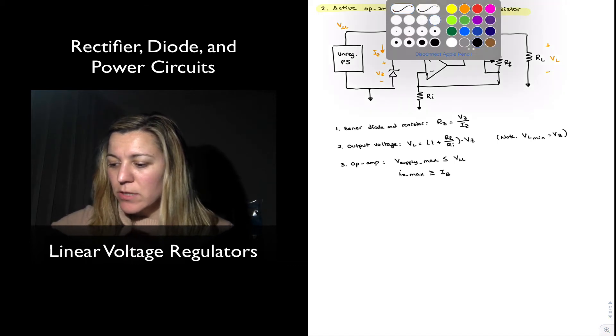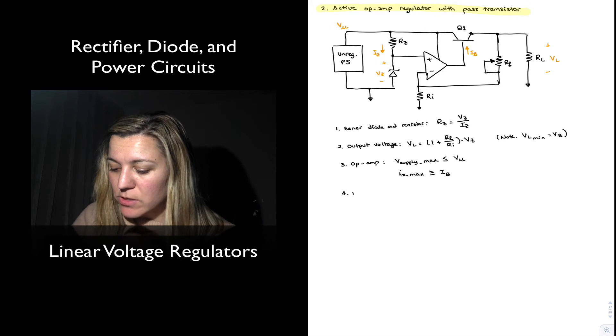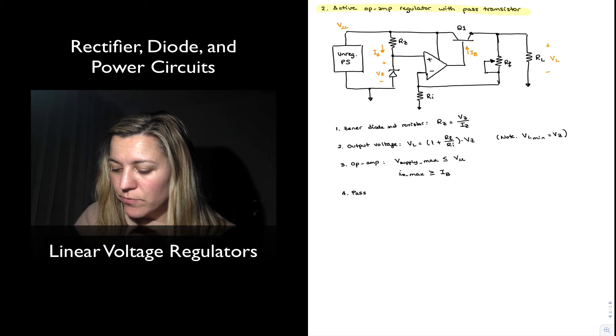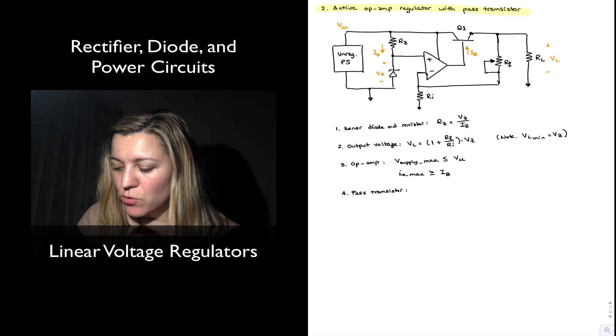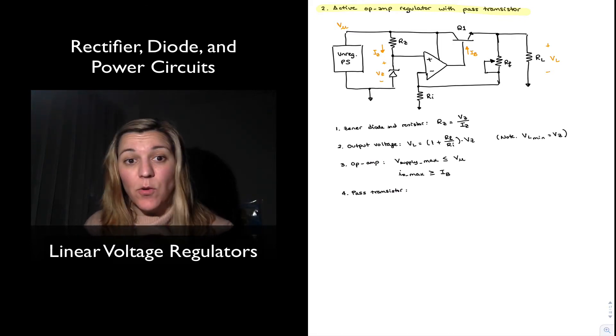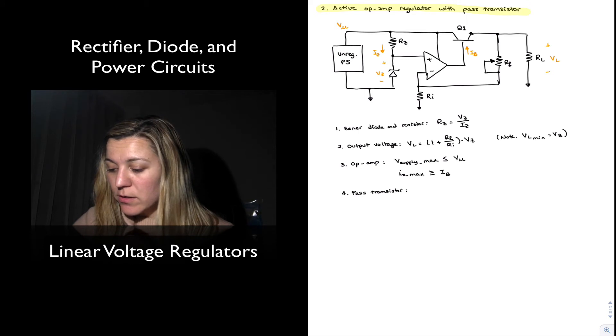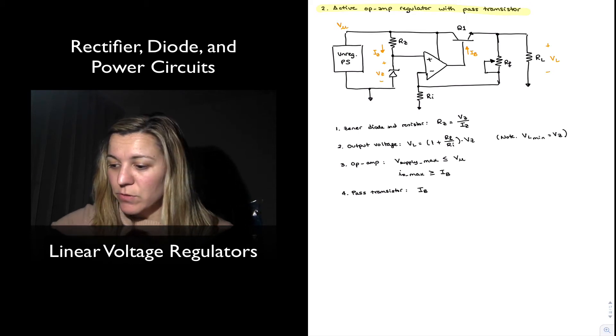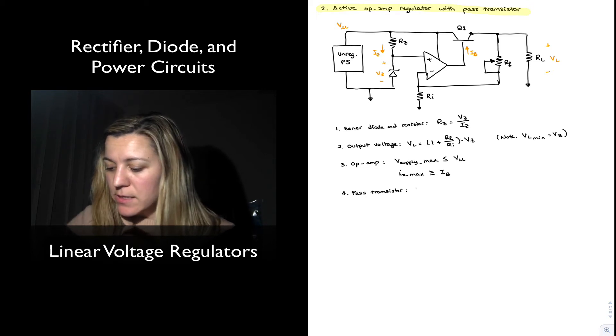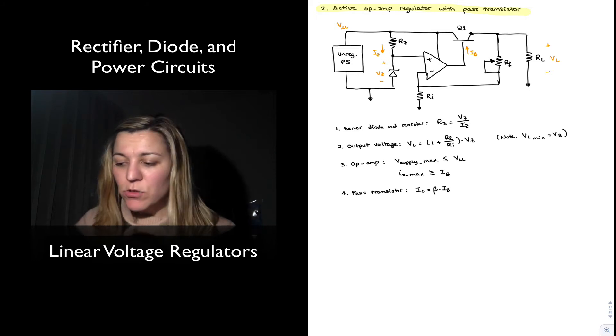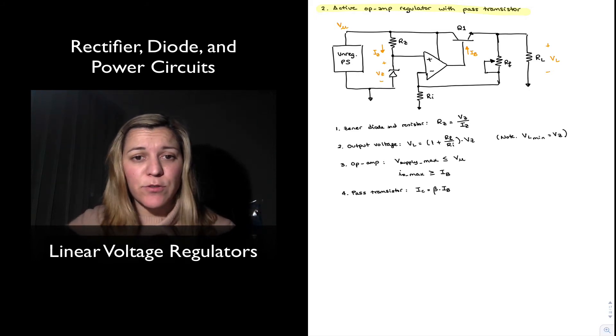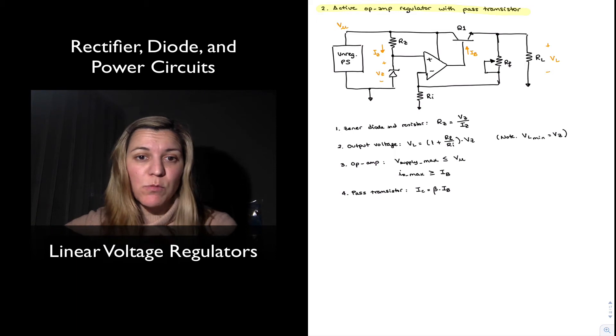Now let's take a look at the requirements for the pass transistor. In this case, it's an NPN transistor, and we know that first of all IB is going to be equal to, or rather I will typically write it the opposite way, IC is equal to beta times IB. Notice that this transistor is going to typically have to handle a lot of current, so it's not going to be a small signal transistor but rather a power transistor.